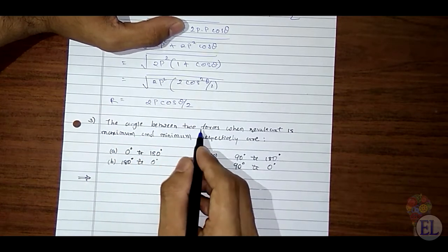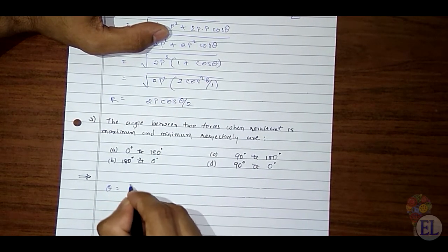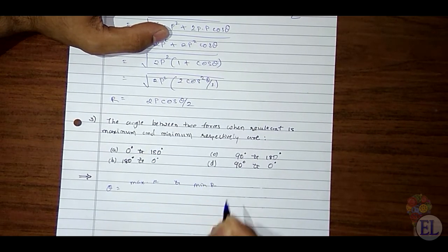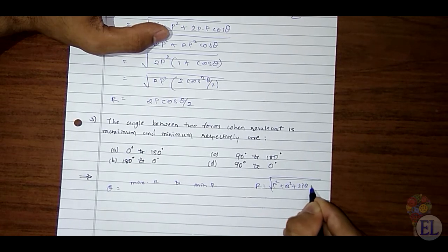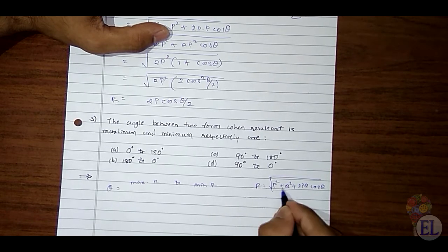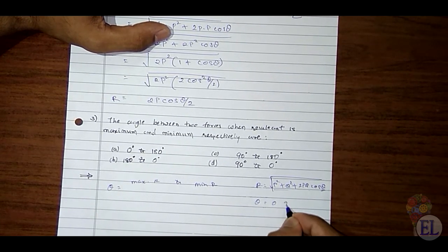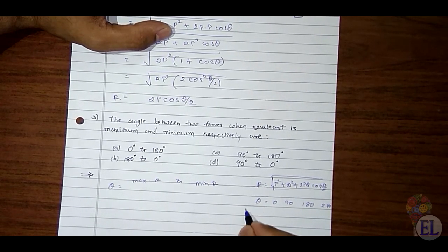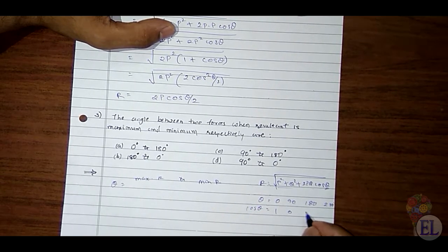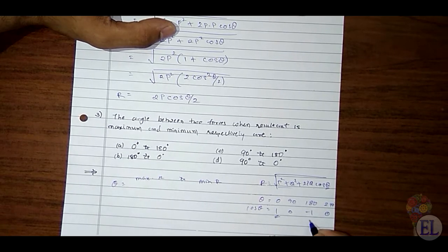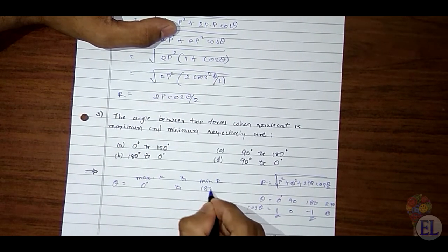The next question is: what is the angle between two forces when the resultant is maximum and minimum respectively? We know R = √(P² + Q² + 2PQ·cosθ). Evaluating cosθ at key angles: cos0° = 1 (maximum), cos90° = 0, cos180° = −1 (minimum), cos270° = 0. So the resultant is maximum at θ = 0° and minimum at θ = 180°. The answer is option A.